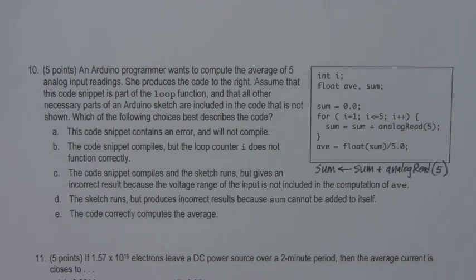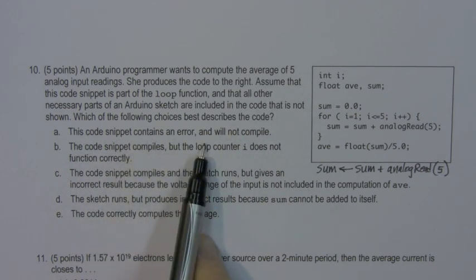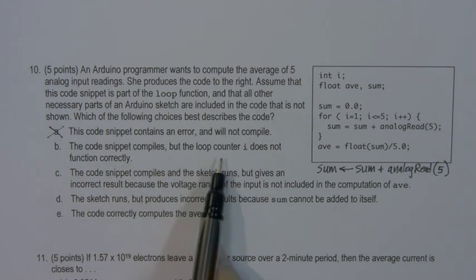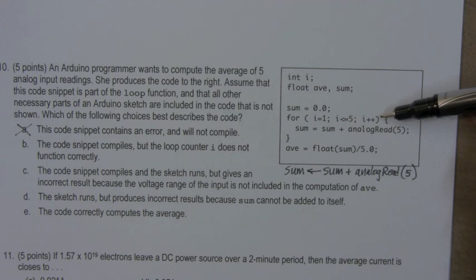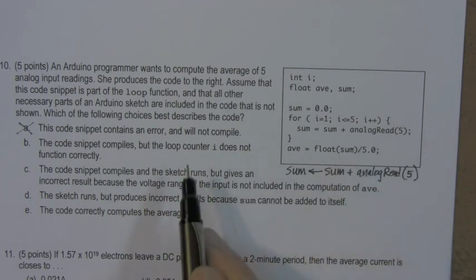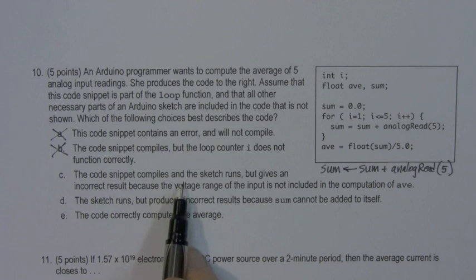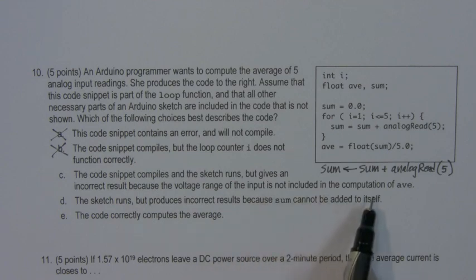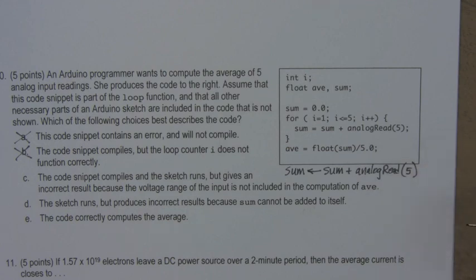So let's return to the question then. Which of the following choices best describes the code? This code snippet contains an error and will not compile. That's not true. There's no errors in that code. The code snippet compiles, but the loop counter i does not function correctly. Well, loop counter i appears here. That is correct. So there's no error in the loop counter i. The code snippet compiles and the sketch runs, but gives an incorrect result because the voltage range of the input is not included in the computation of av. Well, here av is being computed, but av is just computed based on the number sum and has nothing to do with the voltage range.